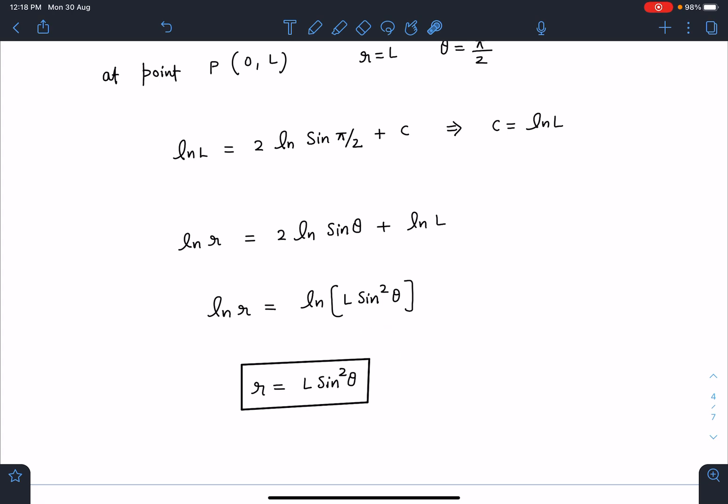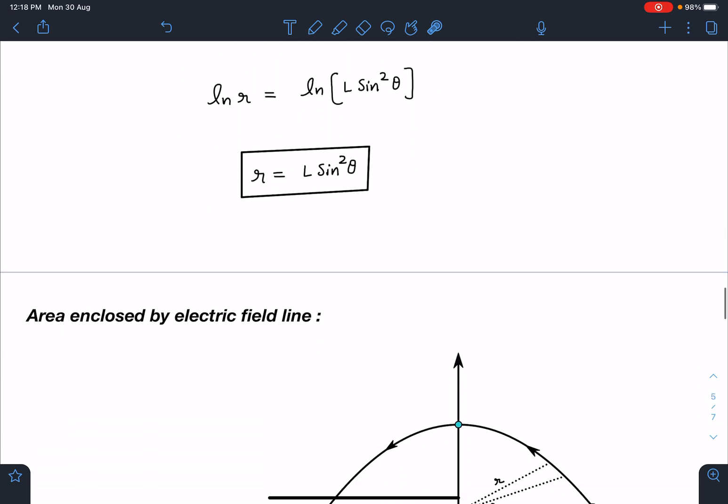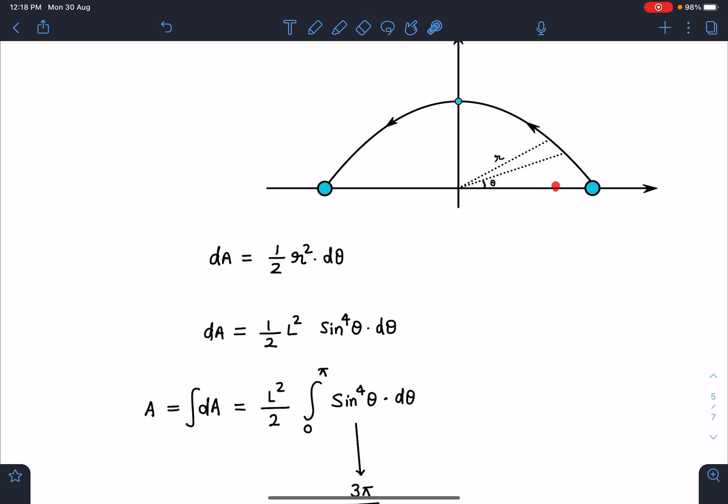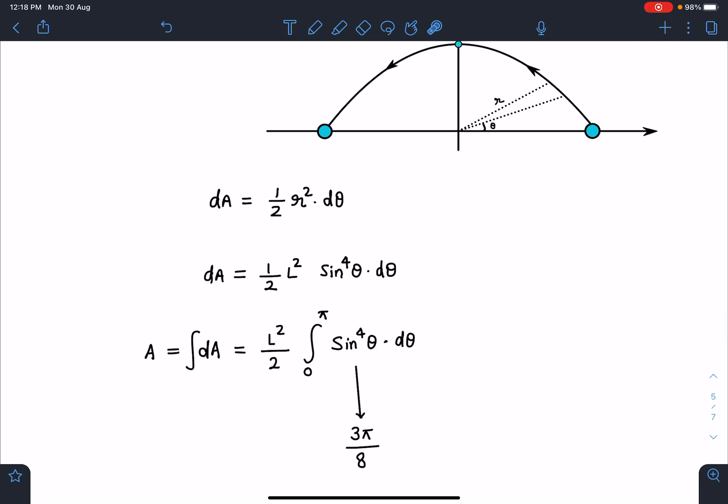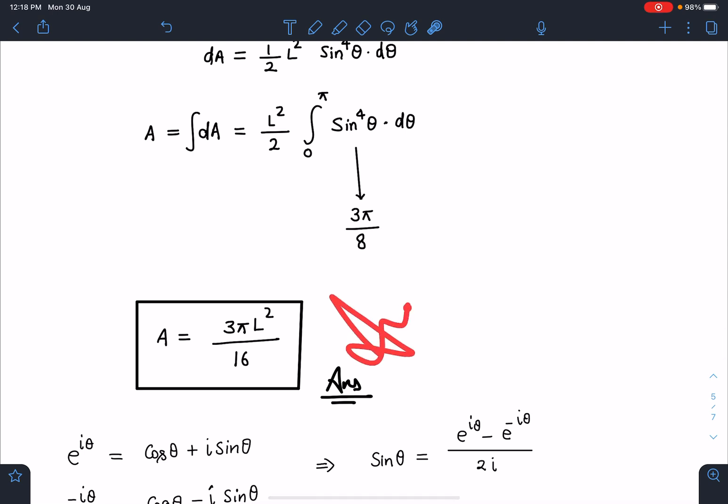Now for area enclosed by the electric field line, this part is quite straightforward. At an angle θ we can take dθ angle, and this is somewhat like a sector. Area of the sector: dA = ½ r² dθ = ½ L² sin⁴θ dθ. For the entire part, 0 to π will be the limit, so the integral is ∫₀^π sin⁴θ dθ. Its value comes as 3π/8. Here we get area A = 3πL²/16. This is the final answer.